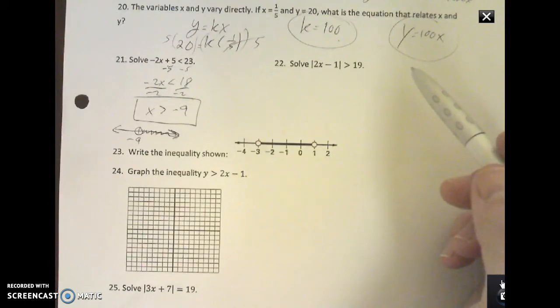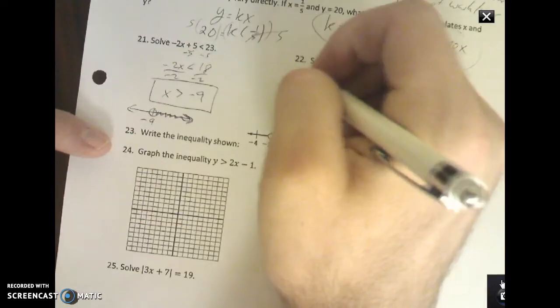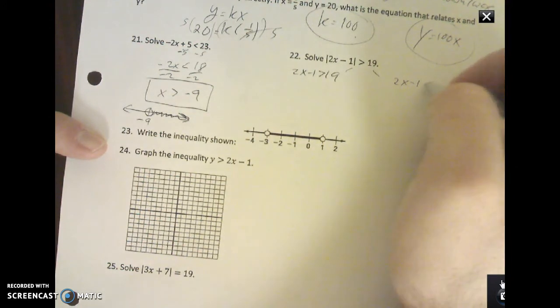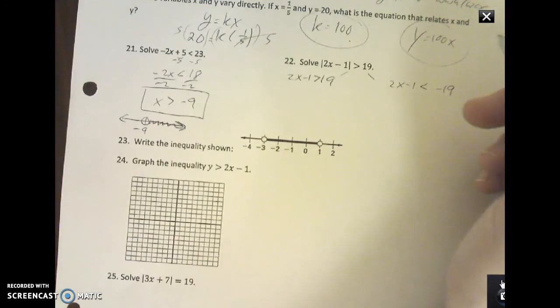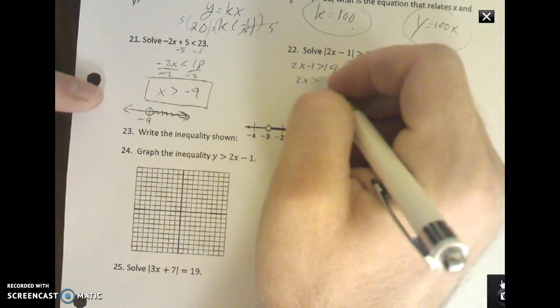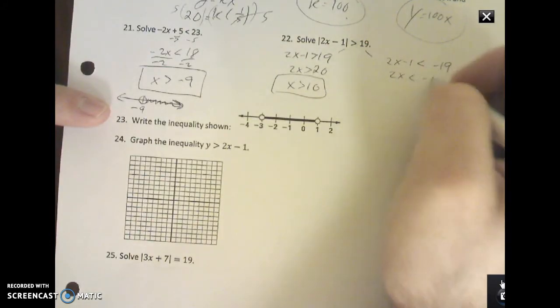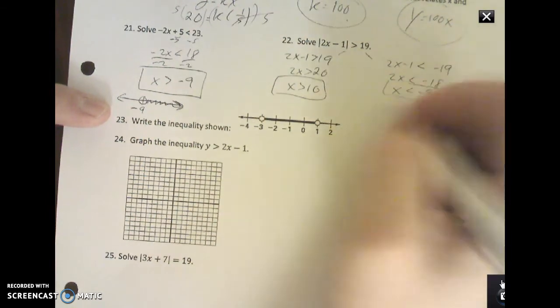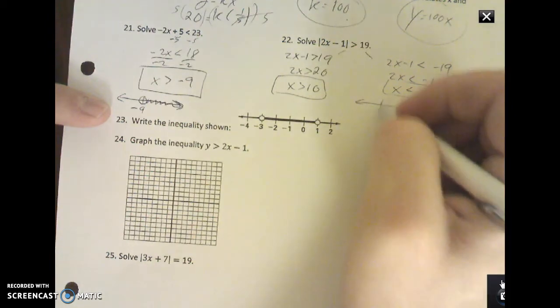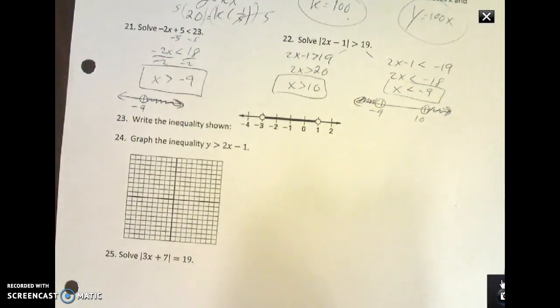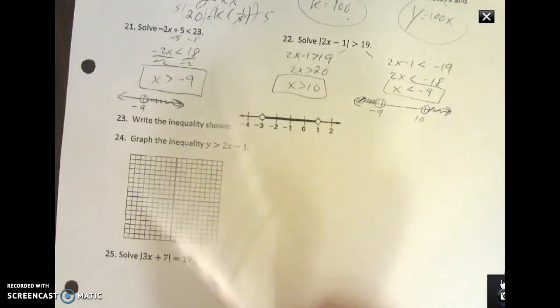Absolute value: every absolute value graph you need to have two equations, or in this case two inequalities. My first one is you just rewrite it the way it is: 2x minus 1 is greater than 19. The second one is 2x minus 1 again, this changes to negative 19, and this symbol flips. So if it was greater, it becomes less than or vice versa. And you just solve each one. Add 1 over, divide. X is greater than 10. Over here, add 1 over, divide. So this would be an or compound inequality because I'm less than negative 9 or I'm greater than 10.